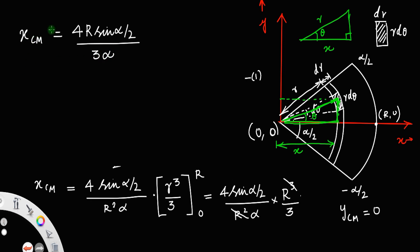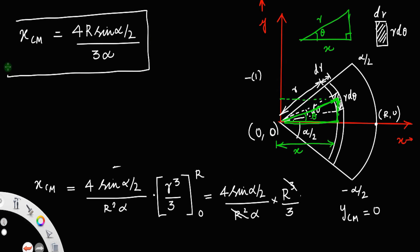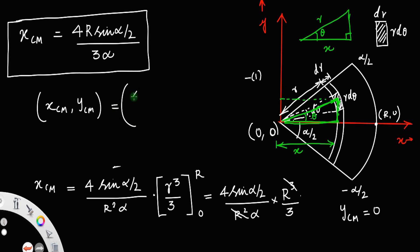So the answer is x_cm equals 4R sin(alpha by 2) divided by 3 alpha. This is the expression for the x coordinate of the center of mass of the circular sector. The coordinate of the center of mass is (4R sin(alpha/2) / 3alpha, 0).